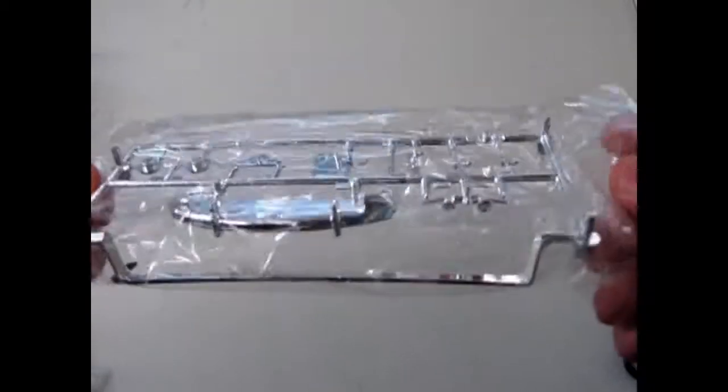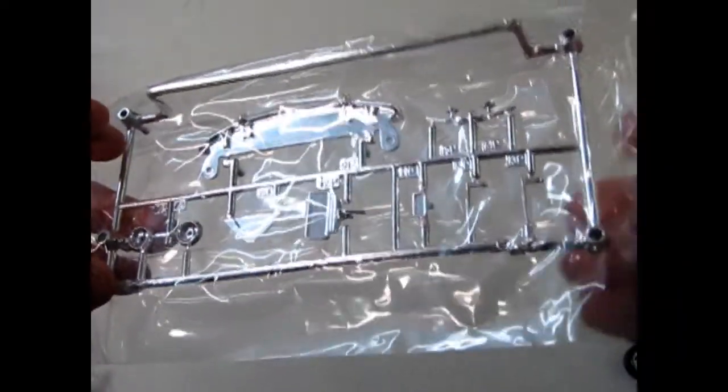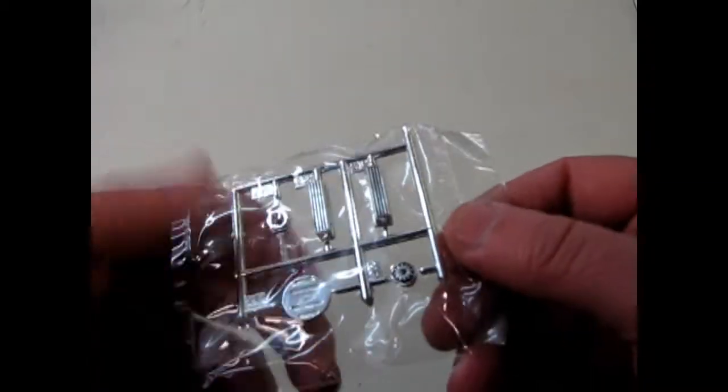Then we've got some chrome here. The front bumper. Some door handles and headlights. As well as hood ornament things. There's a lot of chrome in this kit considering.